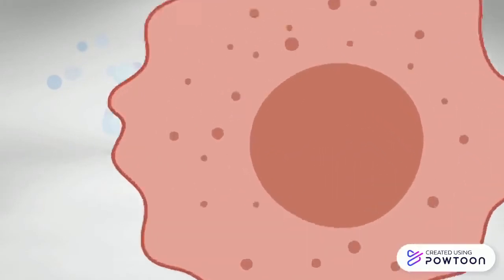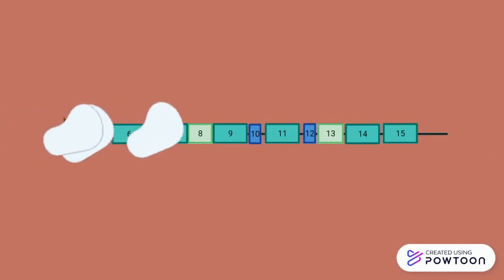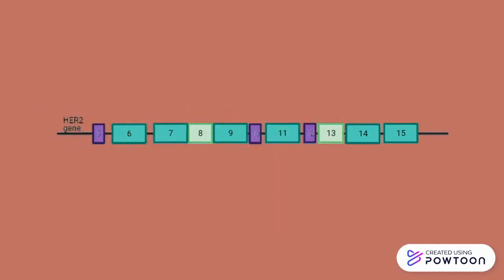CRISPR-Cas9 genome therapy was employed to direct Cas9 to target exon 5, 10, and 12 of HER2 gene to inactivate all isoforms of HER2 and inhibit cell growth in breast cancer cell lines.